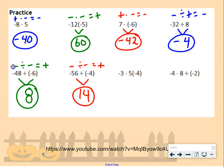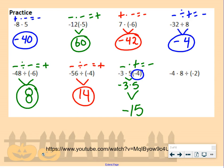Negative 3 times 5 times negative 4: we start with negative 3 times 5. A negative times a positive gives us a negative, so negative 3 times 5 is negative 15. Then we multiply by negative 4. A negative times a negative is a positive, and 15 times 4 is 60.